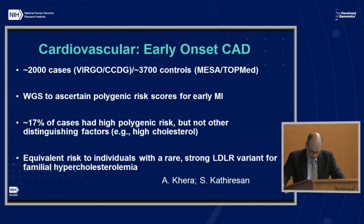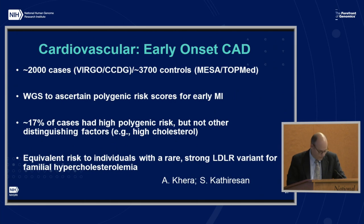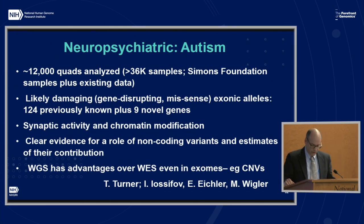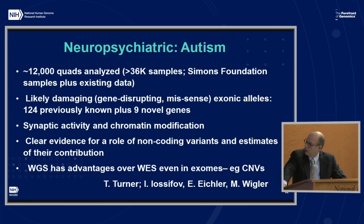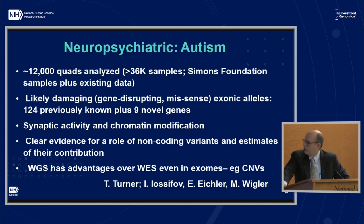Their polygenic risk was equivalent to individuals with a rare strong LDL receptor variant for familial hypercholesterolemia. This shows an application of CCDG data closer to the clinic that I didn't anticipate at the outset. It also highlights the importance of genomic architecture — there's a strong monogenic component and also a polygenic component of what we call the same disease. The neuropsychiatric working group, looking at about 12,000 quads from the Simons Foundation samples together with existing data, found likely damaging exonic alleles in 124 previously known plus nine novel genes, implicating synaptic activity and chromatin modification pathways, and showing evidence for a role of non-coding variants.